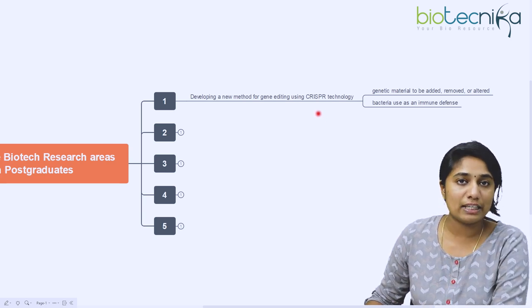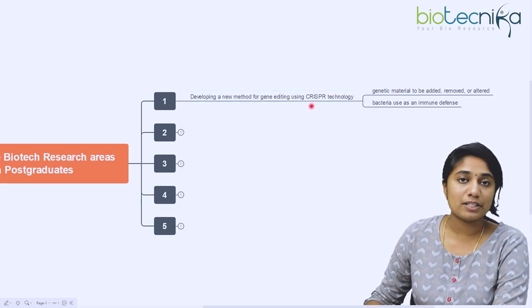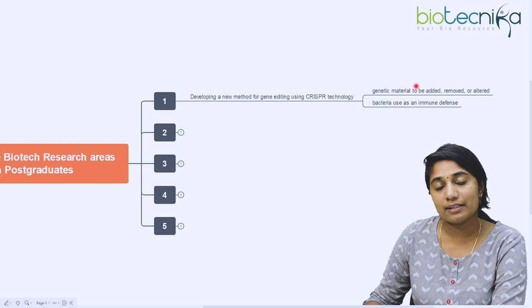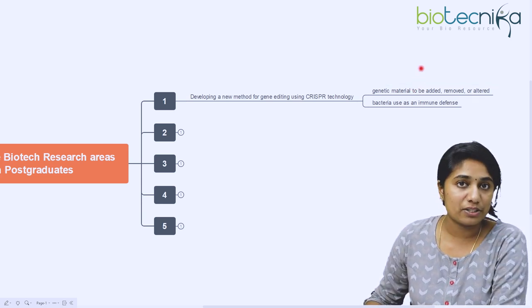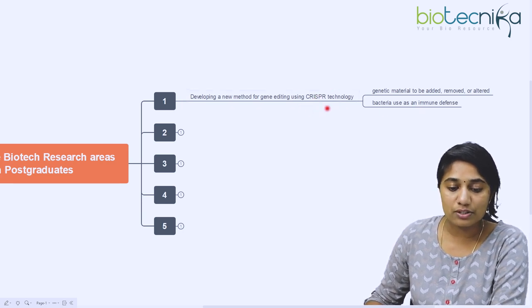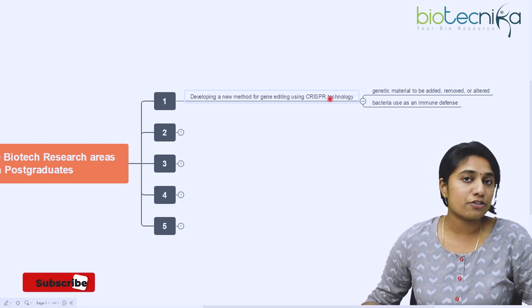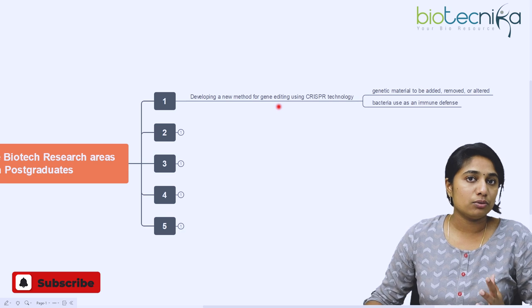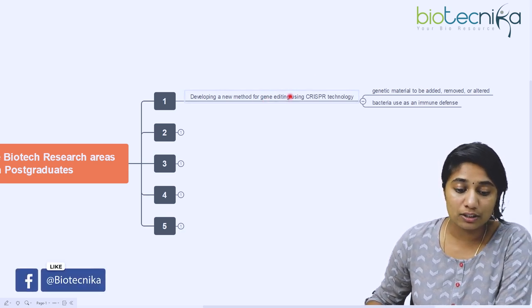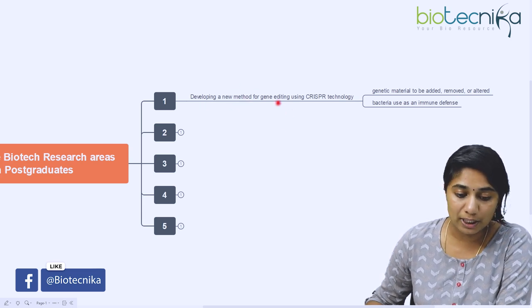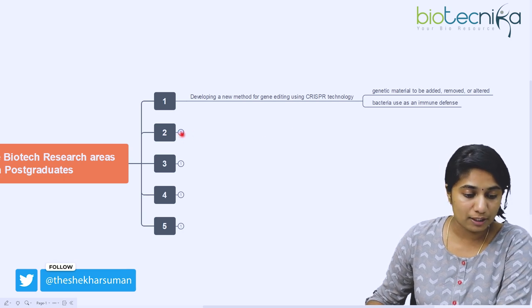That particular segment is recognized by the system, and Cas9 is a protein enzyme system that helps in cleaving this particular gene. That is how we use the CRISPR and Cas9 system, which is naturally occurring in bacteria, for altering genes in humans. You can develop a new method for gene editing using CRISPR technology.